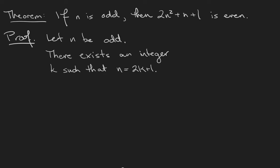So notice that the statement we're proving has the form if p then q. What I want to do is start by assuming my antecedent. So in our proof we're going to start by saying let n be odd. We start by assuming any hypotheses that we're given.